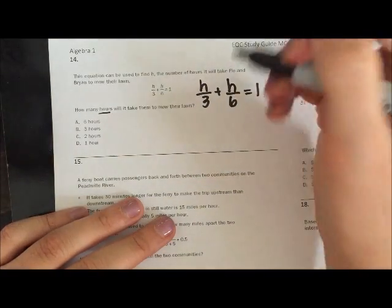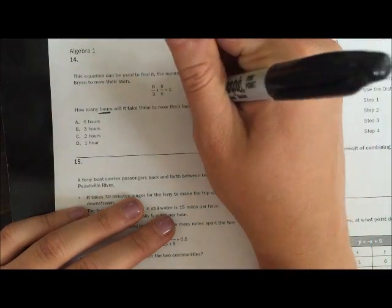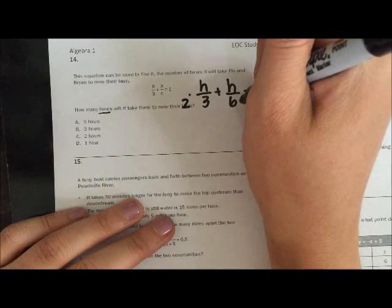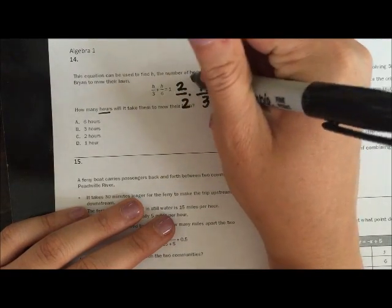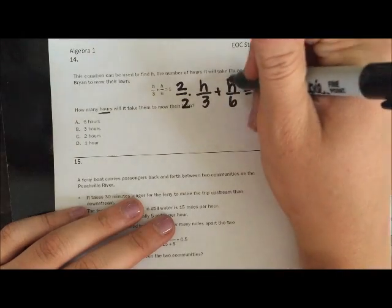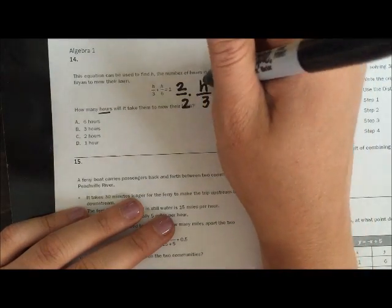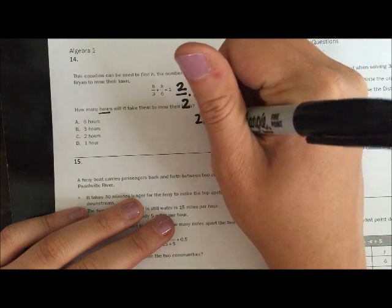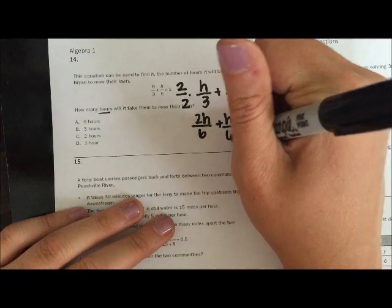Well, it's 6, right? How can I get 3 to be 6 by multiplying? Well, I can multiply 3 by 2 to get it to be 6. Well, whatever I do to the bottom, I have to do to the top. And I'm only doing that to this fraction right here, because this already has 6 as a denominator. So 2 times h would give me 2h. 2 times 3 would give me 6. Everything else stays the same.